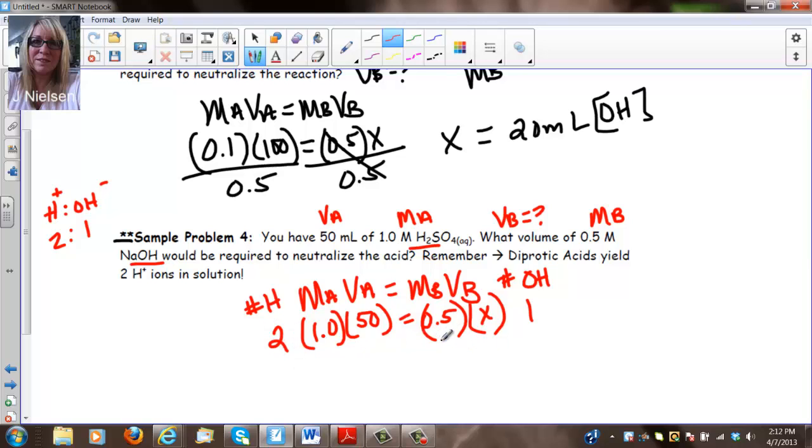So now, when we solve for X, we've got 0.5 times 1, which is 0.5. So this is just going to be divided by 0.5 and this all cancels and it's 2 times 1 times 50 divided by 0.5 and when you solve for X, you get 200 milliliters of the NaOH that is needed to neutralize 50 mils of 1 molar H2SO4. So if your H to OH ratio is not 1 to 1, you have to remember to do this little added extra step and I have seen the regents do that, so be prepared for that.